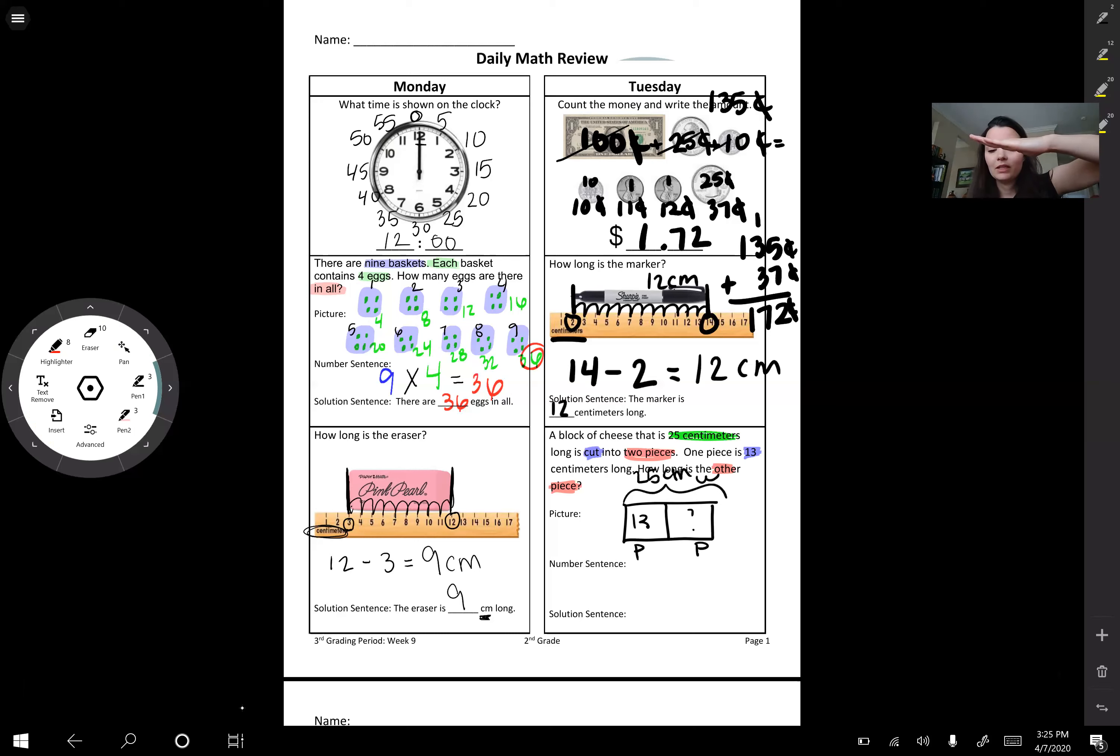And remember, if we have a whole and we're missing a part, we are always going to subtract. So that means our whole 25 minus 13 equals what? I'm going to go ahead and tell you it equals 12 centimeters. Our centimeters are important. There are units. 25 what? 12 what? Miles? Centimeters? Yards? We got to know. Okay.